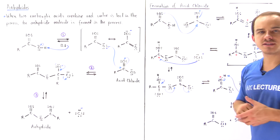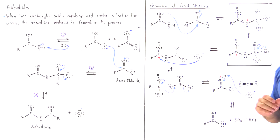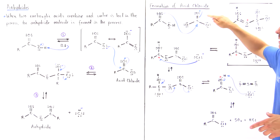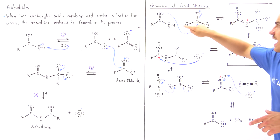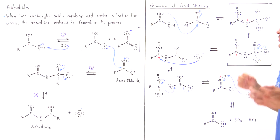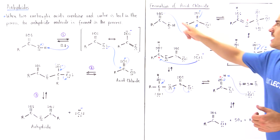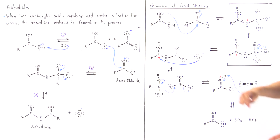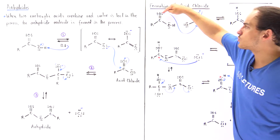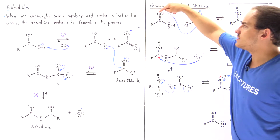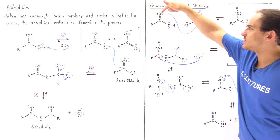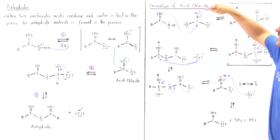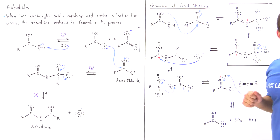We take the carboxylic acid and react it with the following molecule. This acts as our Lewis acid, while this oxygen acts as the nucleophile — the Lewis base — and these two electrons on this oxygen basically act as the nucleophile attacking this sulfur, displacing our pi bond.